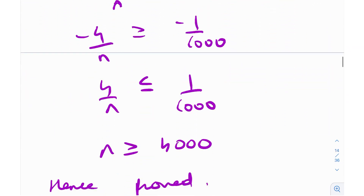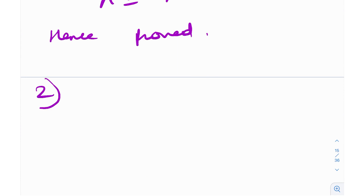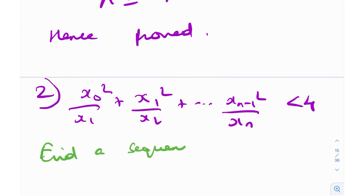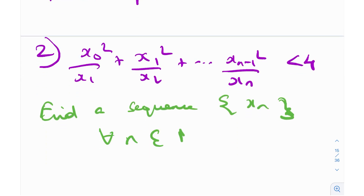Now let's move on to part number 2. In part number 2, we need to generate a sequence such that the given result holds — that is, x0² / x1 + x1² / x2 + ... + x_{n-1}² / xn < 4 — and this must hold for all n belonging to the natural numbers. We need to find any one sequence that satisfies this.